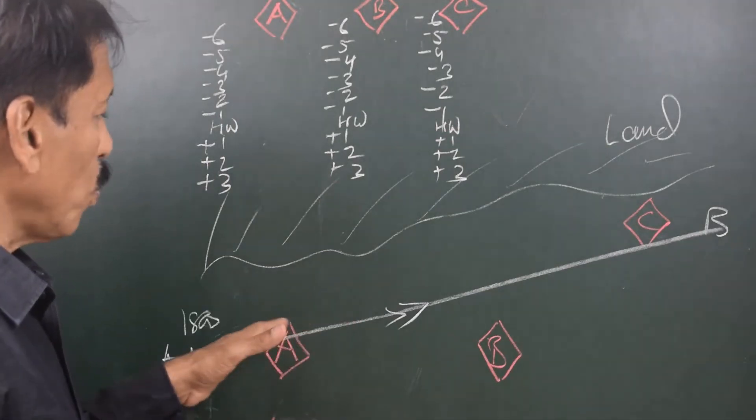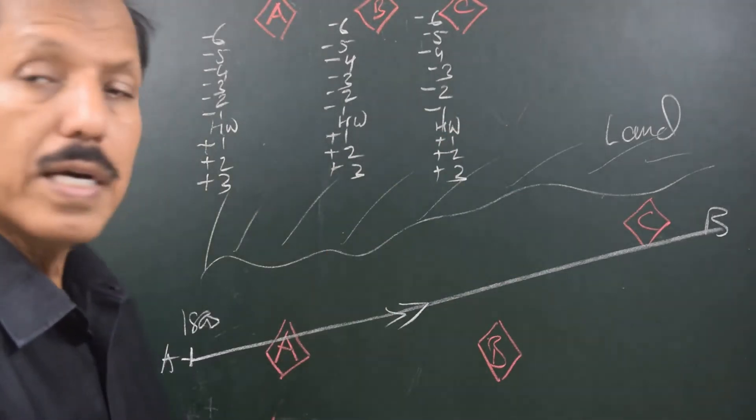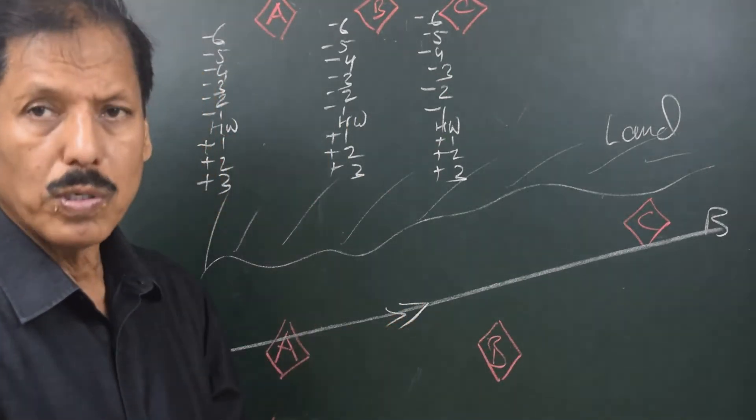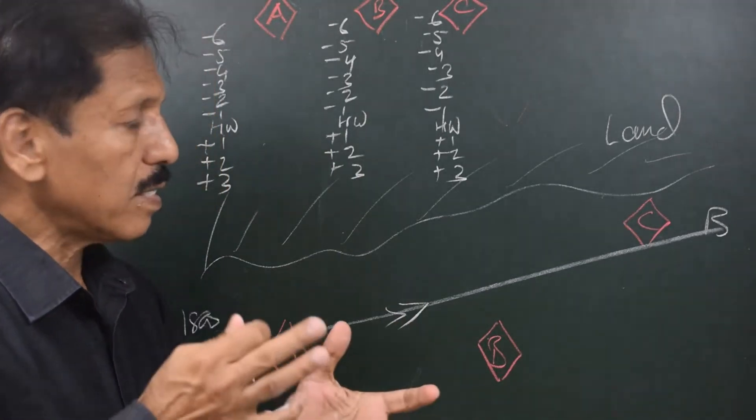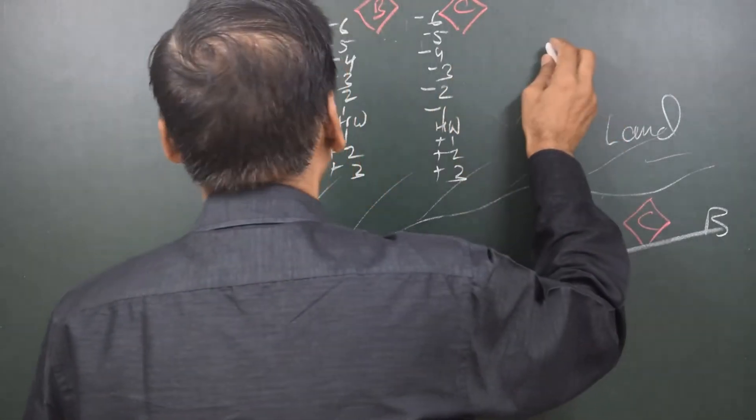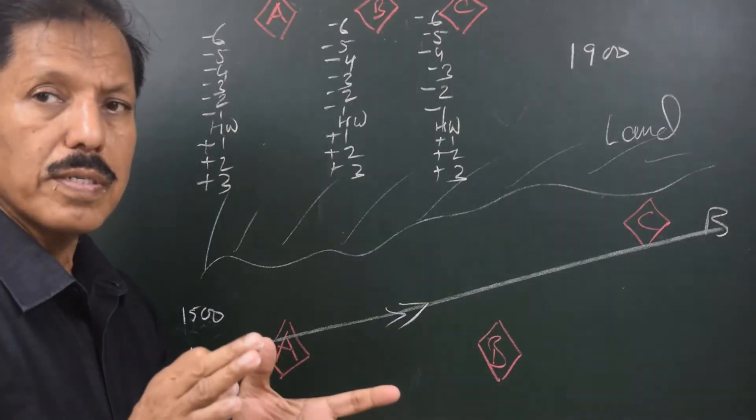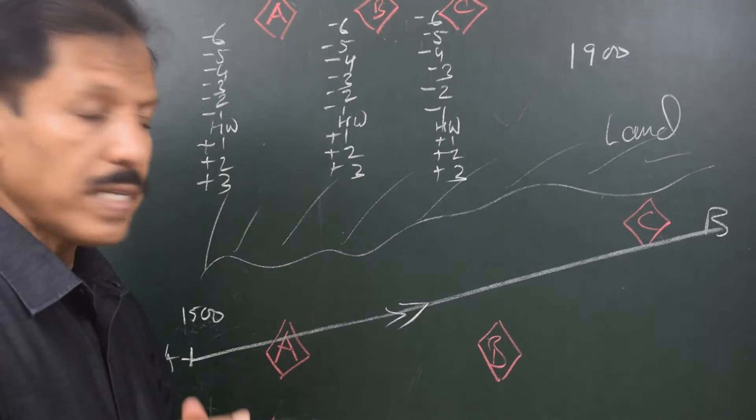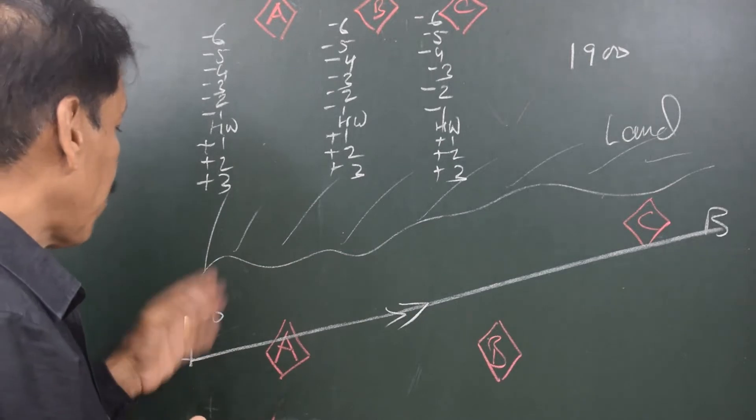The tidal stream details given on the chart refer to the high water of some adjacent port, some nearby port. Suppose the high water in the neighboring port which is referenced is at 1900. Suppose the high water at that standard port happens to be at 1900 hours, and we are at position A at 1500 hours.